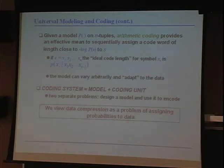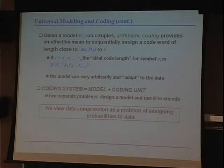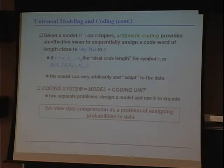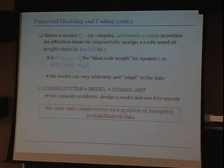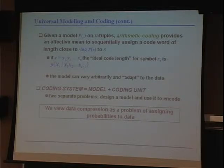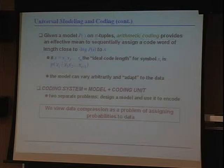A coding system is a model and a coding unit: we model the data, then use arithmetic coding to encode it. The design of the model and using the model to encode are two separate problems. The second part is less interesting nowadays since it's considered fairly solved. However, as you have new types of data, the modeling problem can never be nailed down. We view data compression as a problem of assigning probabilities to data — it's essentially a modeling problem.